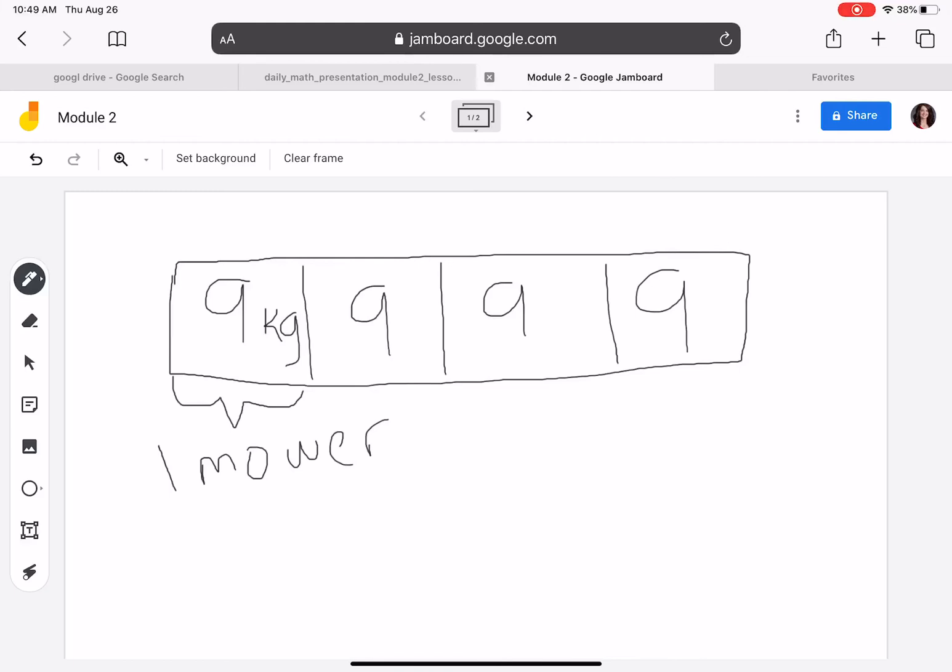Or we can count by 4's: 4, 8, 12, 16, 20, 24, 28, 32, 36. 4 times 9 equals 36.